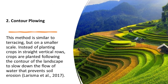2. Contour Plowing: This method is similar to terracing, but on a smaller scale. Instead of planting crops in straight vertical rows, crops are planted following the contour of the landscape to slow down the flow of water that prevents soil erosion.